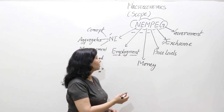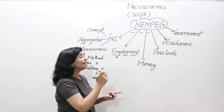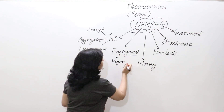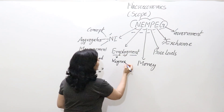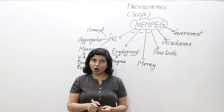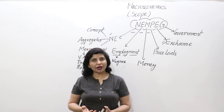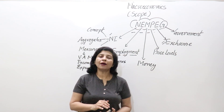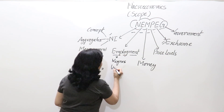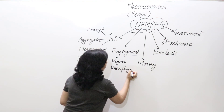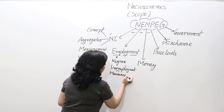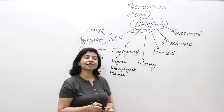Next is employment. Under the scope of macroeconomics, we discuss Keynes' theory of employment — referring to John Maynard Keynes, a very famous economist. The Keynesian theory of employment is central here. We also discuss the theory of unemployment — the problem pertaining to people who do not get employment — and measures to remove unemployment.